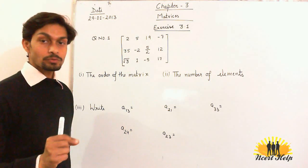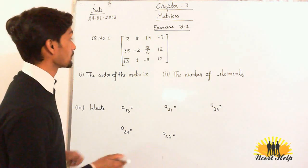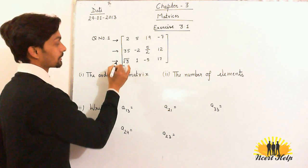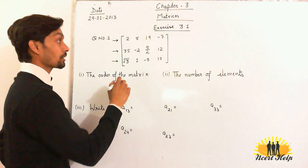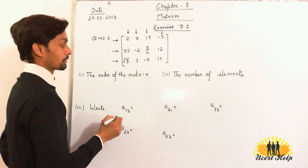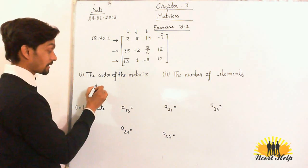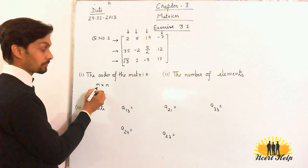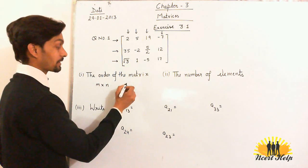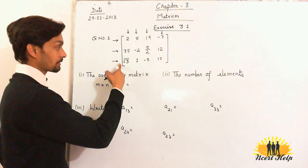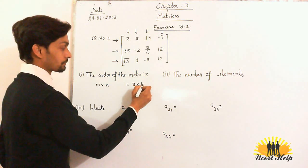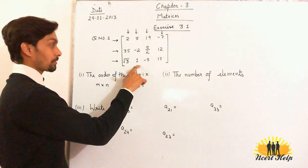Order is always written as number of rows into number of columns. We have to count how many rows there are — one, two, three — there are three rows in the matrix. And how many columns — one, two, three, four. So the order of the matrix is written in the form m into n, where m is the number of rows and n is the number of columns. So the order of the matrix is 3 into 4.